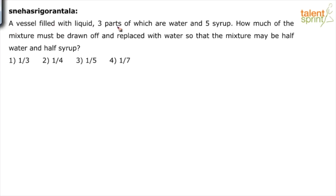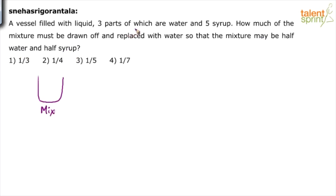A vessel is filled with liquid, three parts of which are water and five parts are syrup. How much of the mixture must be drawn off and replaced with water so that the mixture may be half water and half syrup? So basically, initially we have a mixture which has water and syrup in the ratio 3:5.